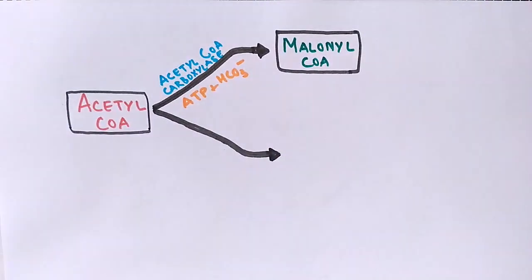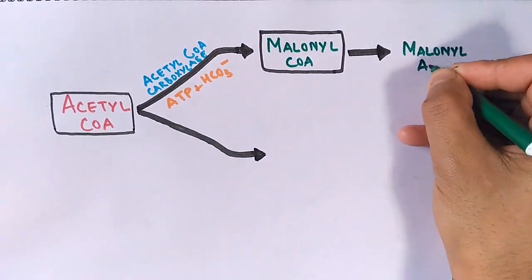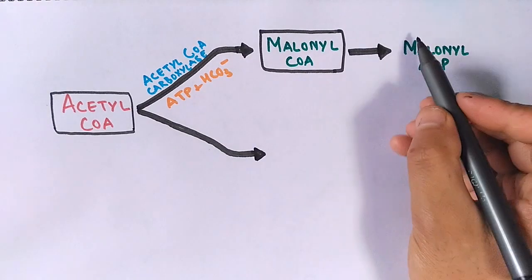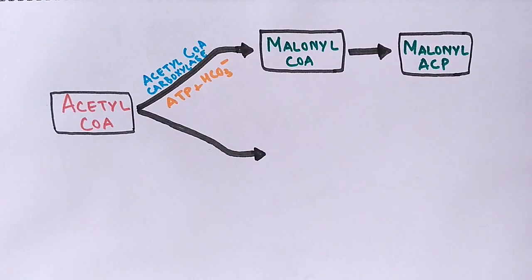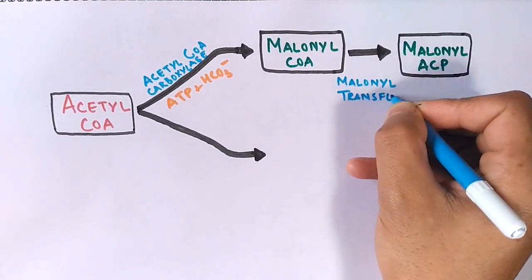And this malonyl-CoA, when it's acted upon by an enzyme called malonyl transferase in presence of acetyl carrier protein, it gives us a molecule namely malonyl-ACP. And the reaction stops here.